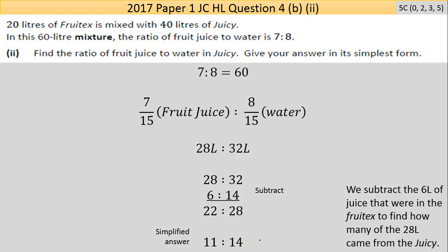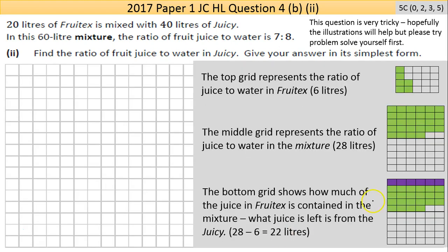There's no common factor for 11 and 9, so that's in simplest form. I hope that made sense — it's very tricky. Go back and look at the chart and try to make sense of it. That's Question 4, best of luck with it, and see you in Question 5.